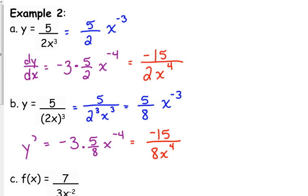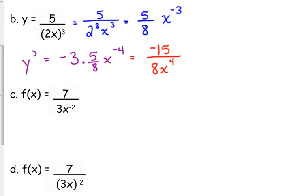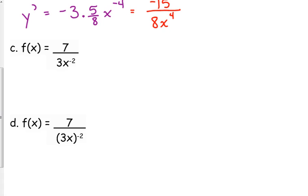So similar answer, but slightly different. Okay, we're going to look at two more like this. Now, very rarely are you going to see a negative exponent that originates in the denominator, but this is just for argument's sake here. f of x is equal to 7 over 3x to the negative 2. Again, when we rewrite this, the only thing that moves is the variable with the exponent.